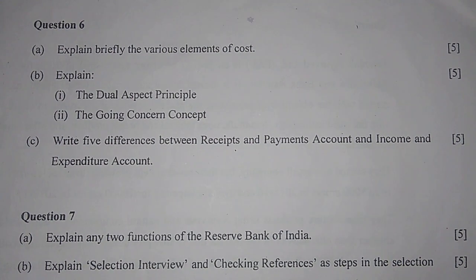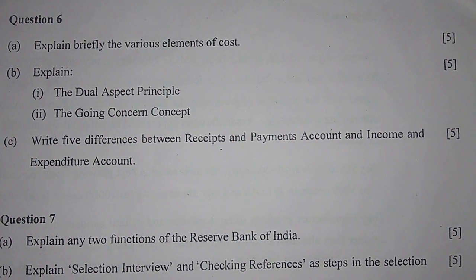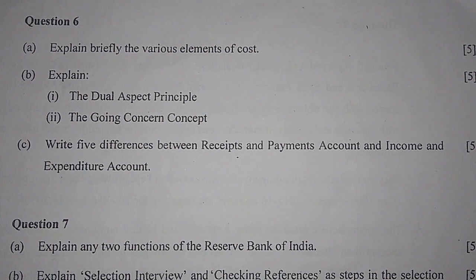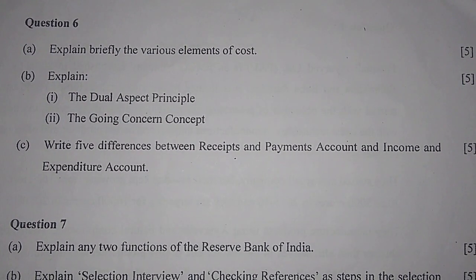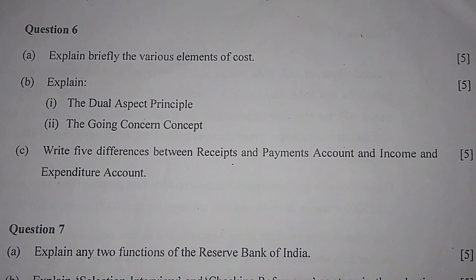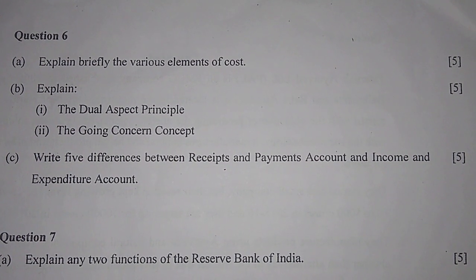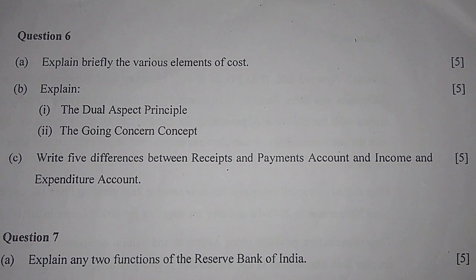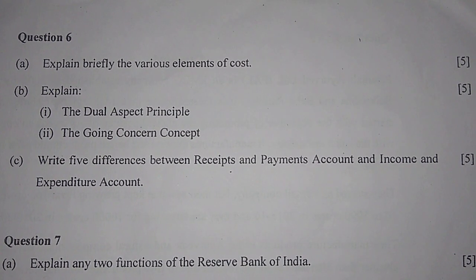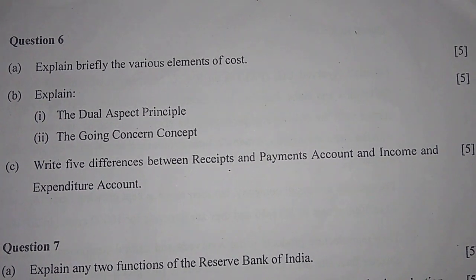Question 6c: Write five differences between Receipt and Payment Account and Income and Expenditure Account. Receipt and Payment Account is a summary of cash receipts and payments, whereas Income and Expenditure Account is a profit and loss account. Receipt and Payment Account is a real account; Income and Expenditure Account is a nominal account. Receipt and Payment Account is prepared to know the cash balance at year end; Income and Expenditure Account is prepared to ascertain the surplus. Receipt and Payment Account contains both capital and revenue items; Income and Expenditure Account contains only revenue items. Receipt and Payment Account starts with the opening cash balance, whereas Income and Expenditure Account has no opening balance.